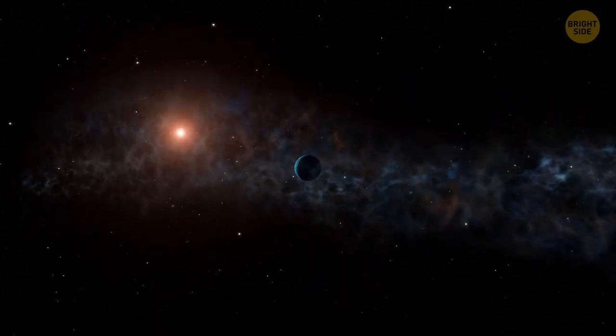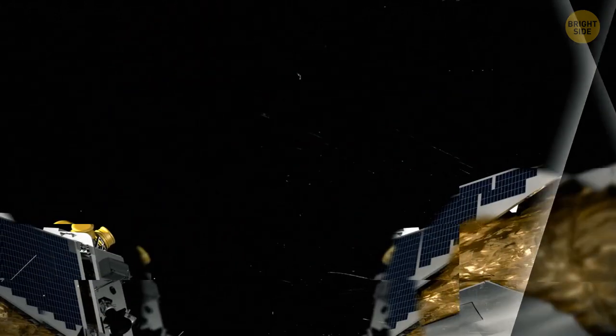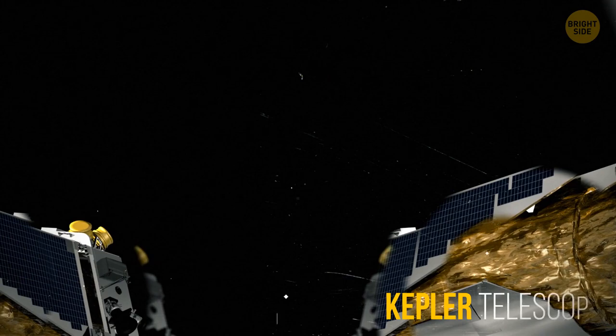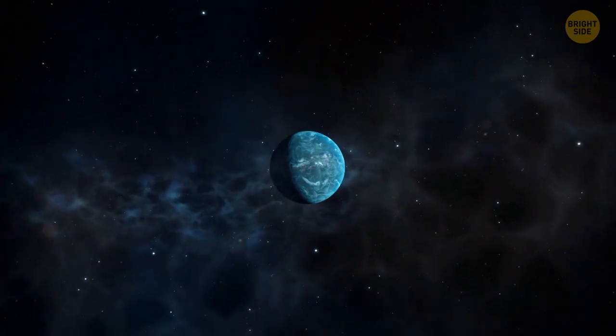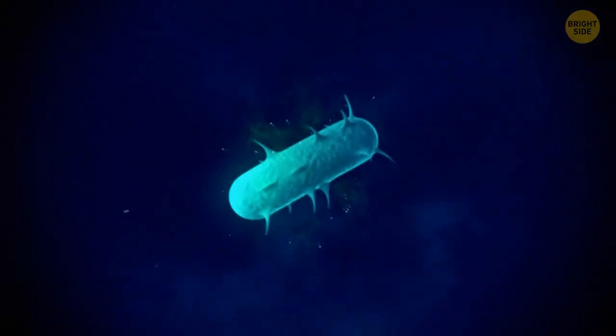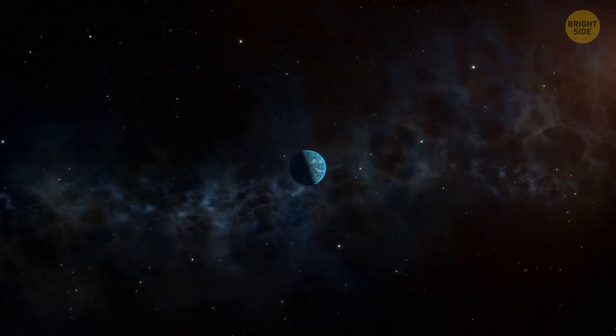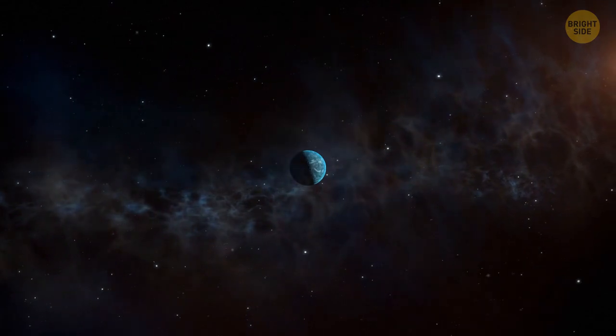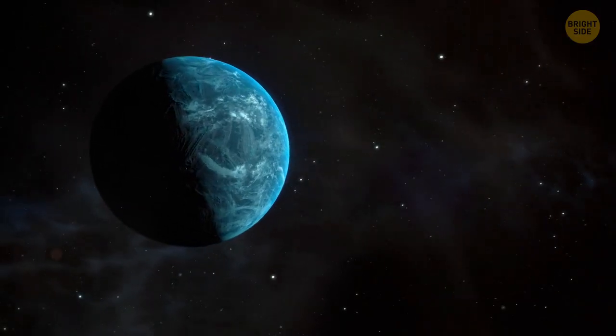This is the first planet located in the habitable zone that was found by the Kepler telescope. In other words, there may be water on this planet. And if there's water, there may be life. Kepler-22b can become our new potential home. So let's take a closer look at it.